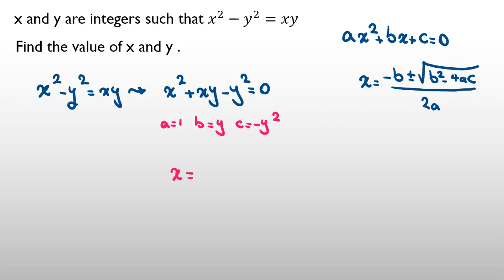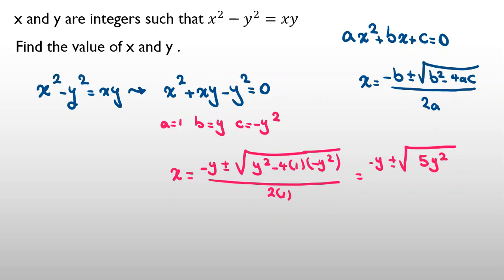And if I calculate x, it will be negative b, negative y, plus or minus square root of b squared, y squared, minus 4ac, which will be 1 times 4a is 1, so it is negative y squared, all over 2a which is 2 times 1. If we simplify, it will be negative y plus or minus square root of 4y squared plus y squared, which will be 5y squared, over 2.